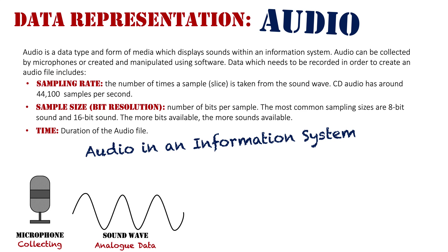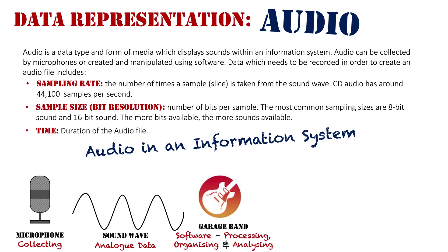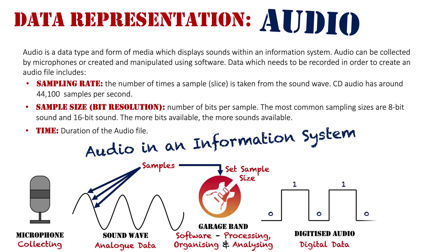You need to use software to convert that analog data. For example, GarageBand, which is a popular music-making application. What that software does is it takes the samples of the audio at a set sample size and brings it into the system. Once we're bringing it into the system, we can't have analog anymore, so while those sampling sizes are being taken and the sample size is being set, it is now being converted into digital audio — zeros and ones. It's no longer an analog waveform; we are converting it into digital data.